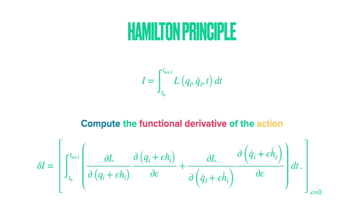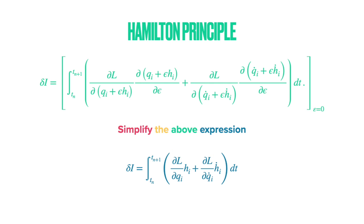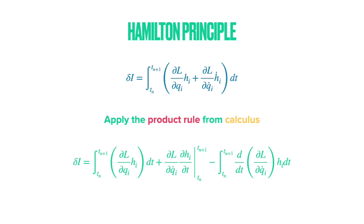We can apply the chain rule, expand, and then eliminate the parameter epsilon. Once we have eliminated the parameter epsilon, we obtain the rate of change of the functional as a function of the Lagrangian, our variables q, and the perturbations, variations, or test functions h.